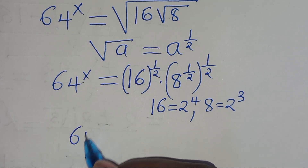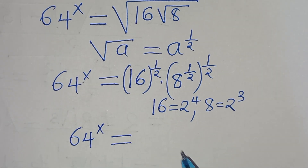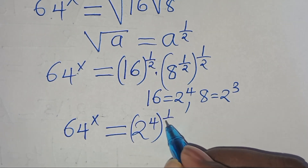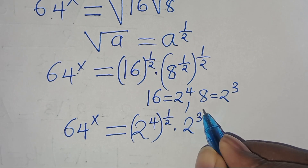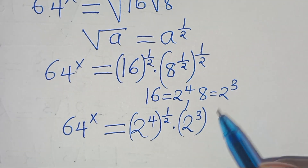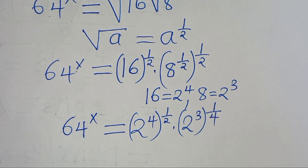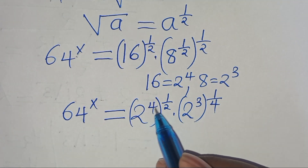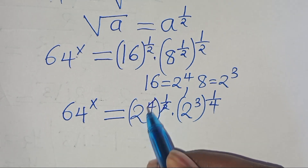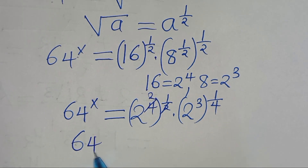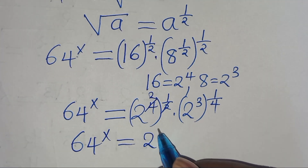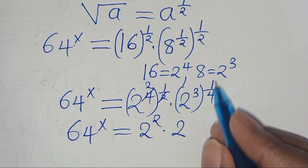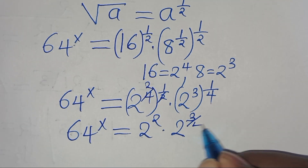So we have 64 raised to the power of x, this is equal to 2 to the power of 4 multiplied by half, and then we have 2 to the power of 3, raised to the power of half times half, which is 1 over 4. Therefore, simplifying here: 4 times half gives 2, so this implies we have 64 raised to the power of x, this is equal to 2 to the power of 2, times 2 to the power of 3 times 1 over 4, so this is 2 raised to the power of 3 over 4.